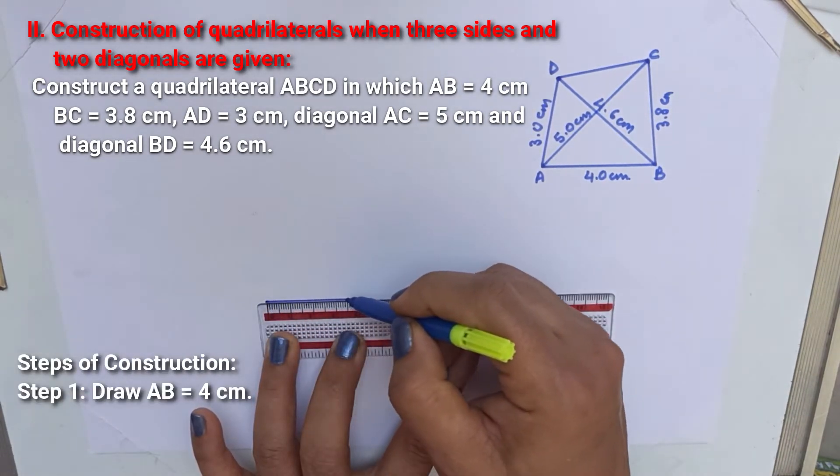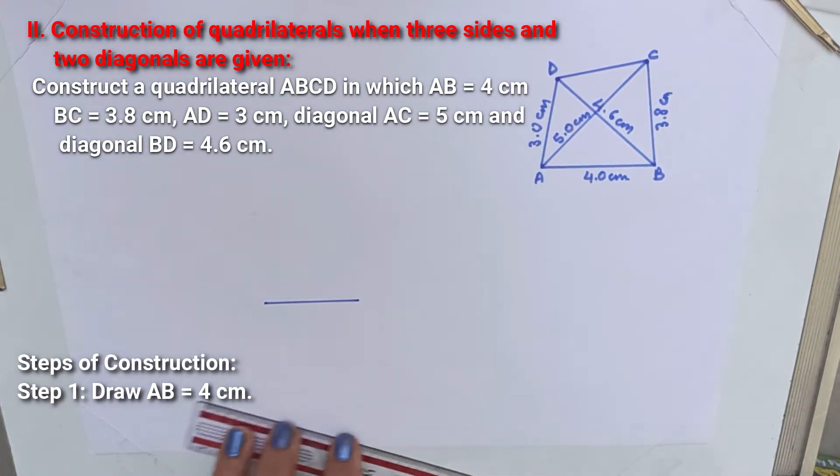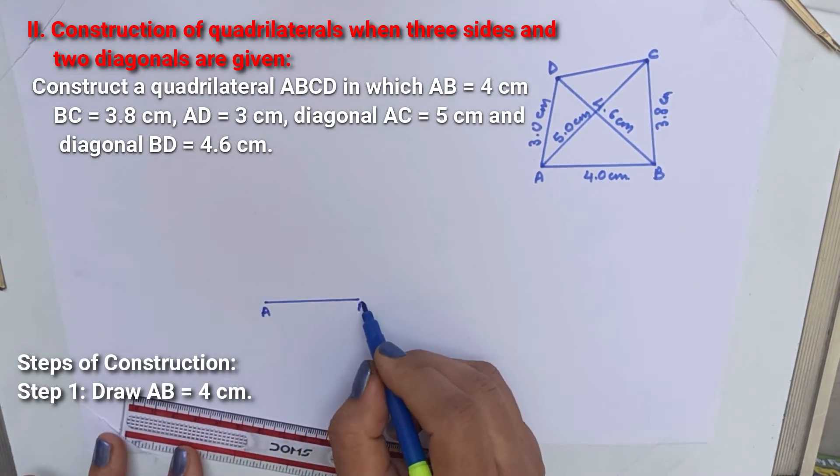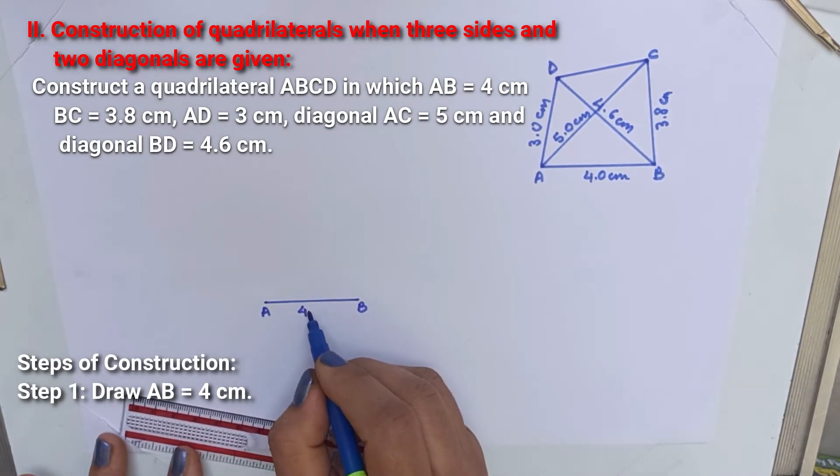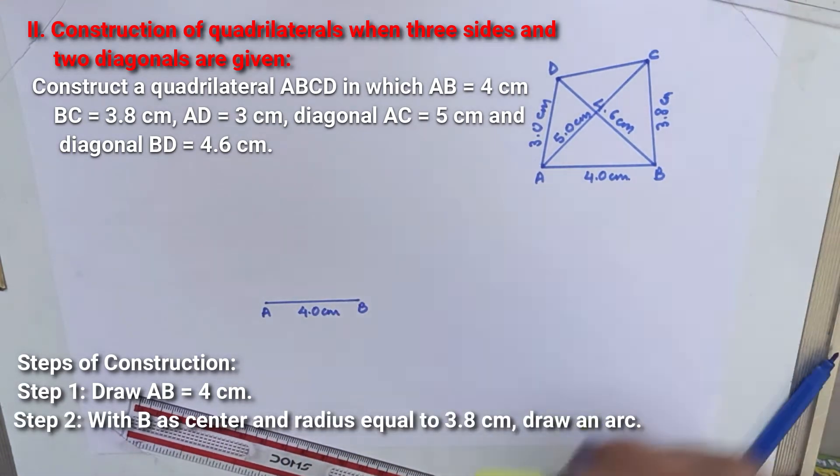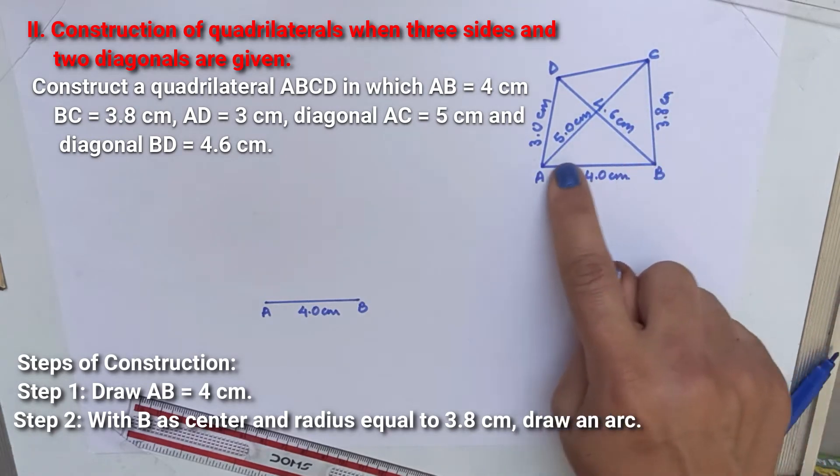Steps of construction. First step, draw AB equal to 4 cm, BC equal to 3.8 cm, and AC equal to 5 cm. Draw a triangle ABC.